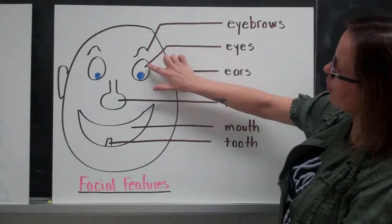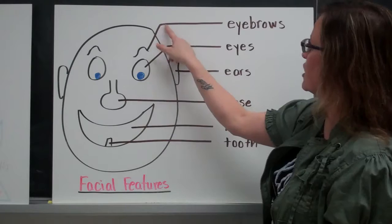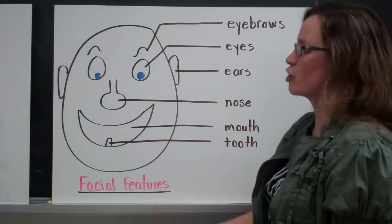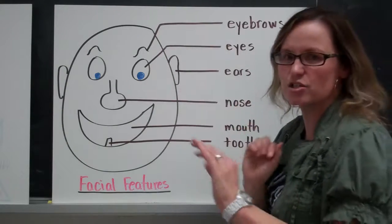So these diagonal lines here are called brackets in scientific world. And these are my label lines. I tried my best to use a ruler, but they should be straighter than this on yours.